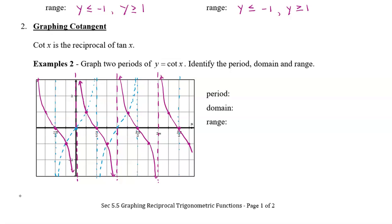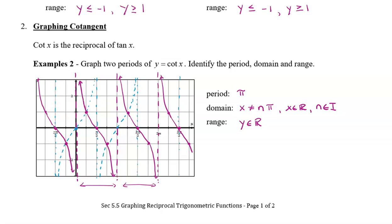The cotangent has a period of pi, just like tangent — you can see it takes pi to repeat. For the domain, x cannot be n pi, because every pi there is an asymptote, where n is an integer and x is all real numbers otherwise. The range, just like the tan graph, is all real numbers, because it goes up and up and down and down without bound. And those are the basics of graphing cosecant, secant, and cotangent.